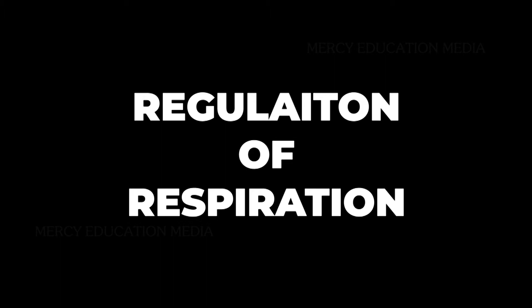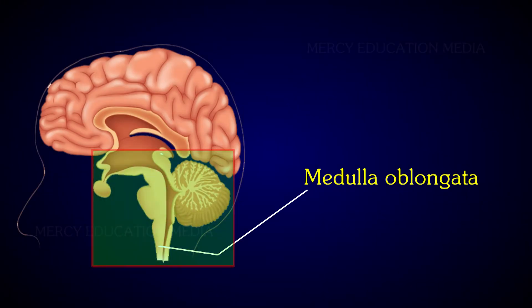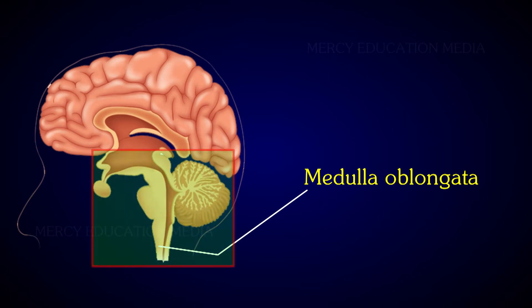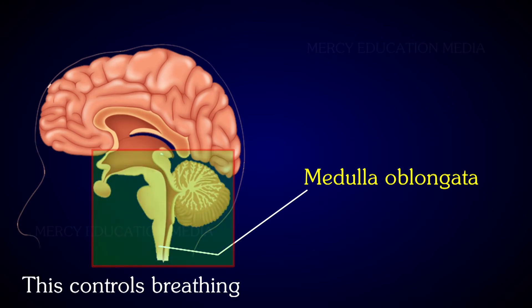What do you know about the regulation of respiration? The brain — specifically the medulla oblongata — contains a respiratory centre. This controls breathing.